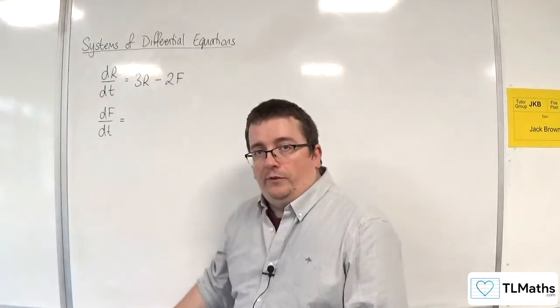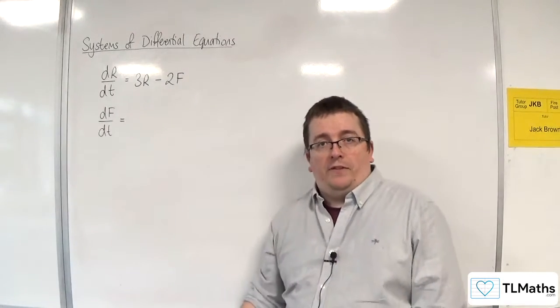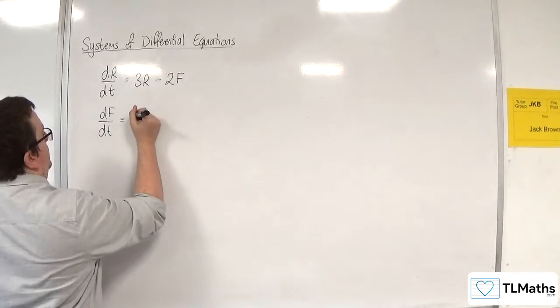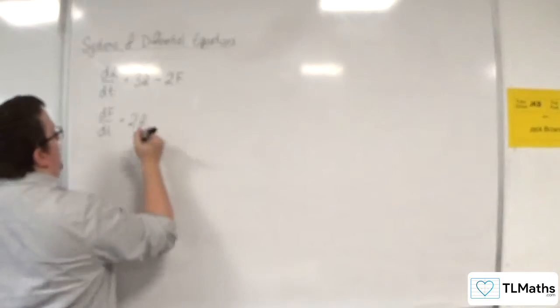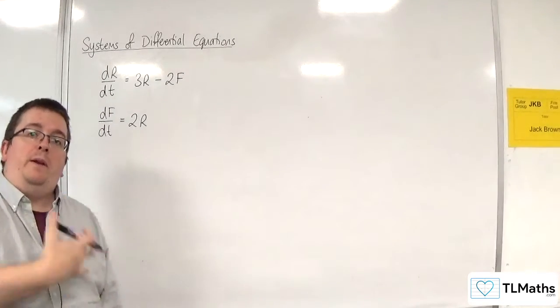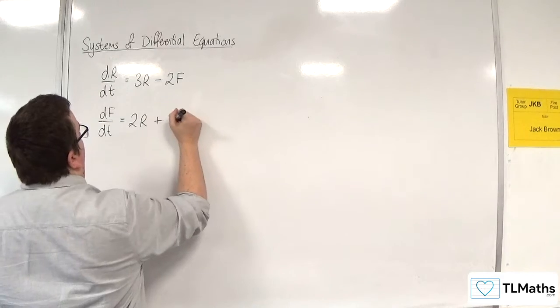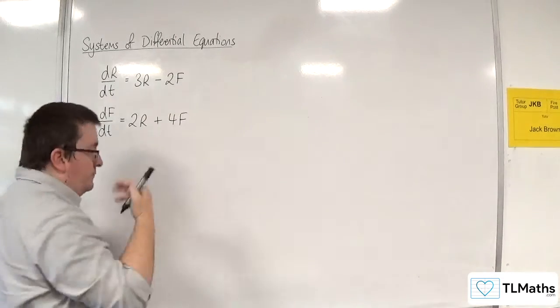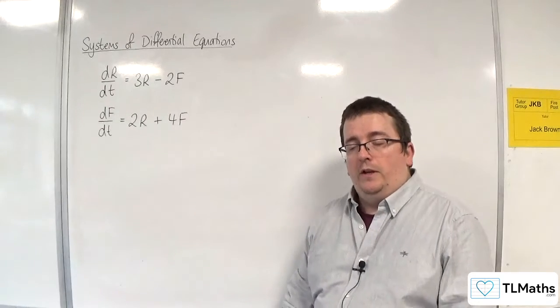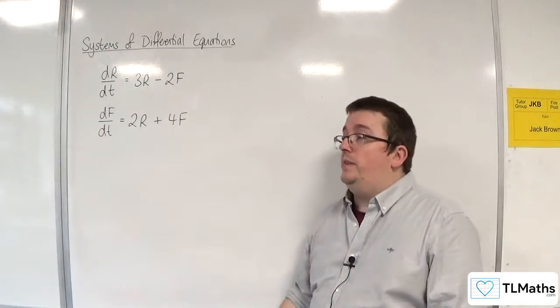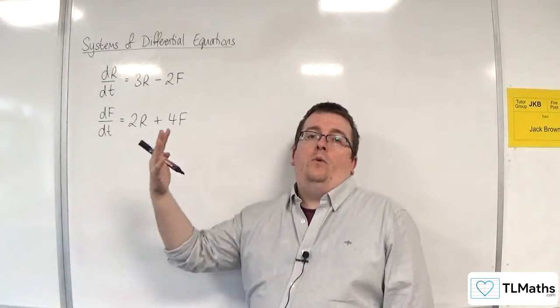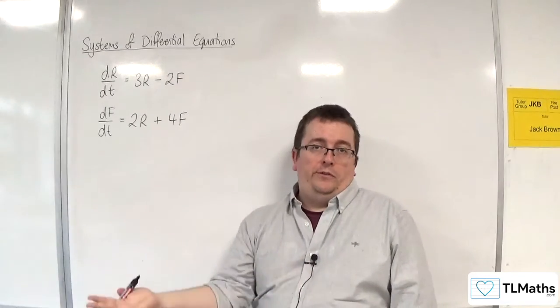Whereas for the foxes, the more rabbits there are, the more foxes there are going to be. So we could put in 2R here. And the more foxes there are, the more foxes there will be, because they are mating as well. So we could have something like 4F. And this sets up a system of differential equations. And you could have initial conditions for this. So when t is 0, you could say that there were 100 rabbits and there were 15 foxes.